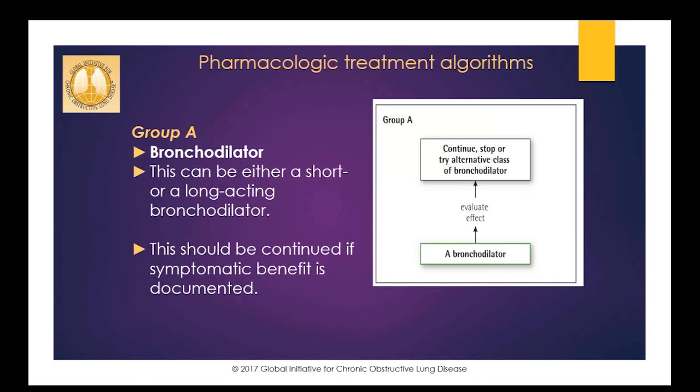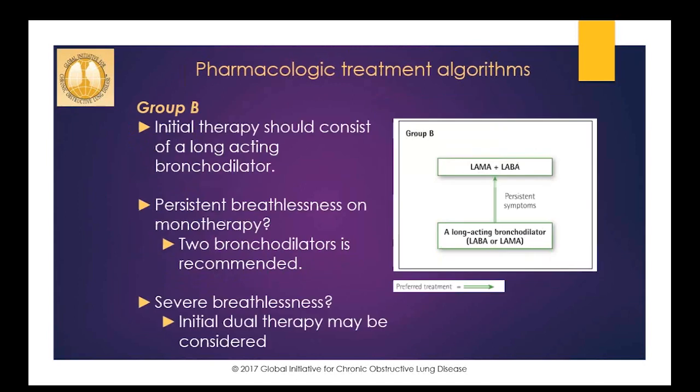Starting with group A — remember, our patient Bob was group A — these patients can be appropriately treated with a bronchodilator, which could actually be a SABA or a LABA.